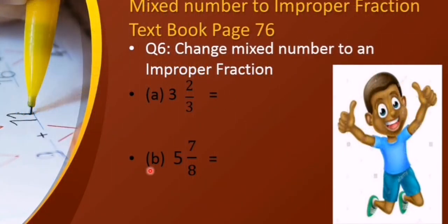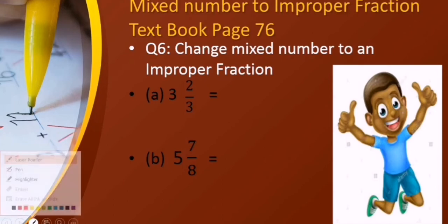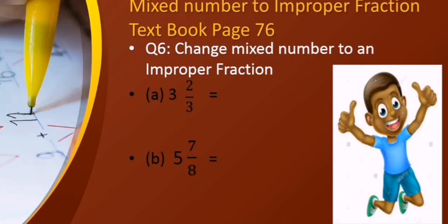Now some examples from our textbook, page 66, question 6: change mixed number to an improper fraction. Part A: 3 whole 2 by 3. We multiply the whole number 3 by the denominator 3: 3 times 3 we get 9. Now add the numerator: 9 plus 2 we get 11. The denominator 3 remains the same, so the answer is 11 by 3.